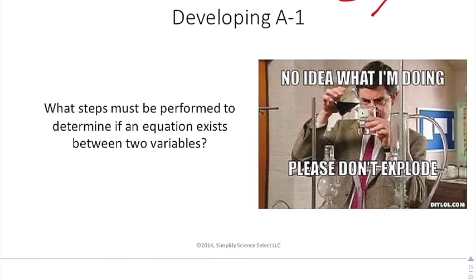What steps must be performed if an equation is going to exist between two variables? First, you have to establish some sort of relationship. Once you've established the relationship, you have to do an experiment to show causation. You have to numerically define that. You have to expand the equation to a variety of circumstances, and hopefully you can find the limitations of those experiments as well.